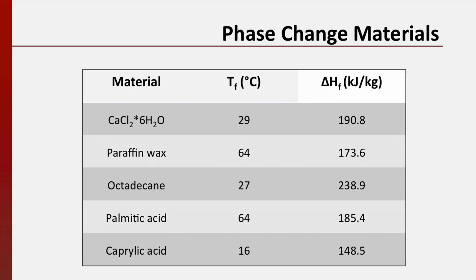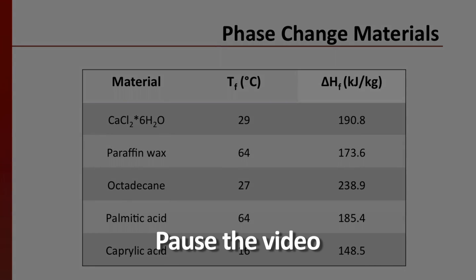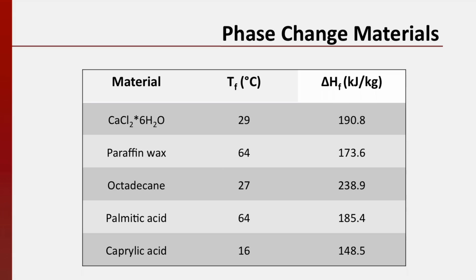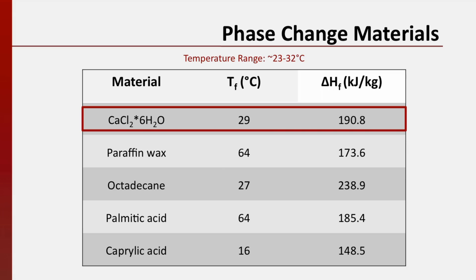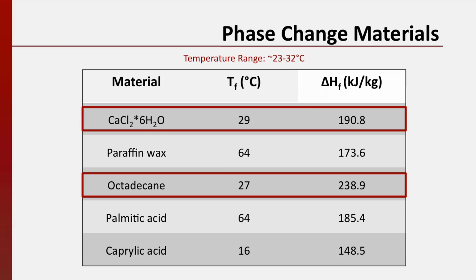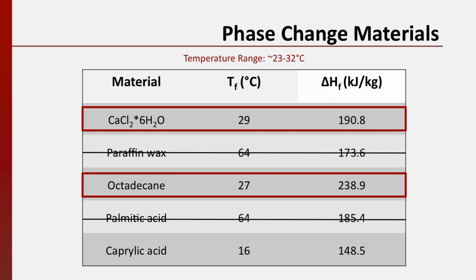Let's take a look at this chart of example phase change materials again. What phase change material would you use in a home or building in Singapore? Why? What additional information might you need to know to help make your decision? Pause the video here and discuss your choice with the person beside you. On average, year-round temperatures in Singapore hover between 23 and 32 degrees Celsius. This is important when making our decision. Some of you may have selected calcium chloride hydrate as a candidate phase change material because its melting temperature falls within the range of daytime high temperatures in Singapore. You may have selected octadecane for a similar reason.